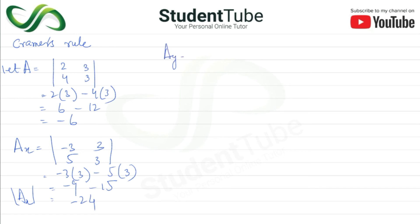So phir ay is equal to 2, 4, minus 3 or 5. So 2, 5 minus 4 multiply by minus 3. 2, 5 threes are 10 minus minus plus plus 12. So yah ho gaya? 22 ay.